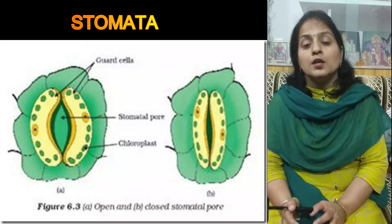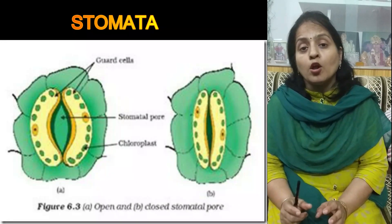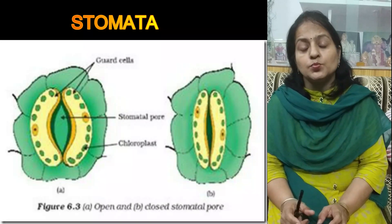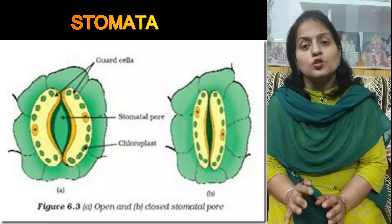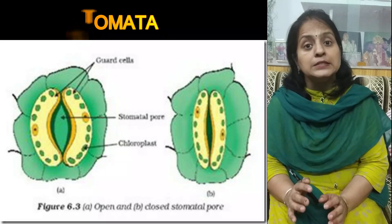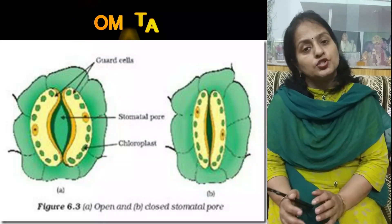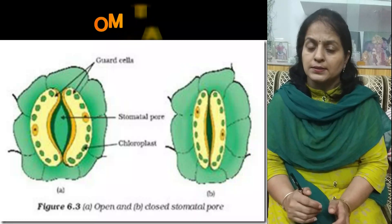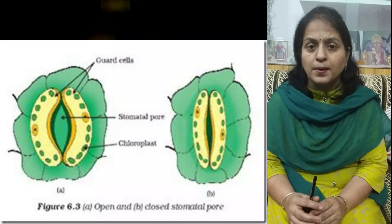Exchange of gases — taking in carbon dioxide and giving out oxygen — from the leaves takes place through stomata. Stomata are the small openings present on the surface of leaves through which exchange of gases takes place in a plant.